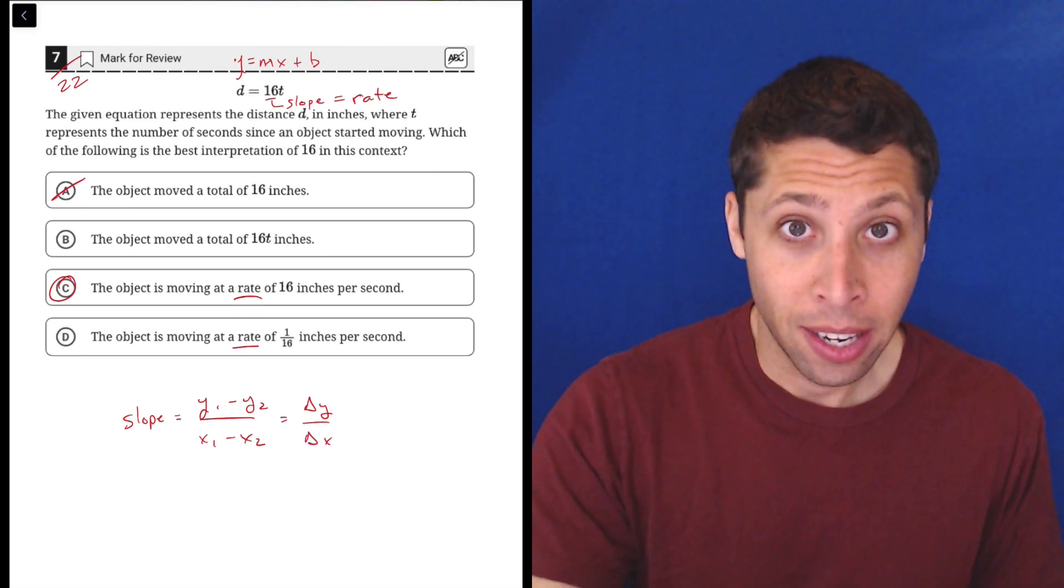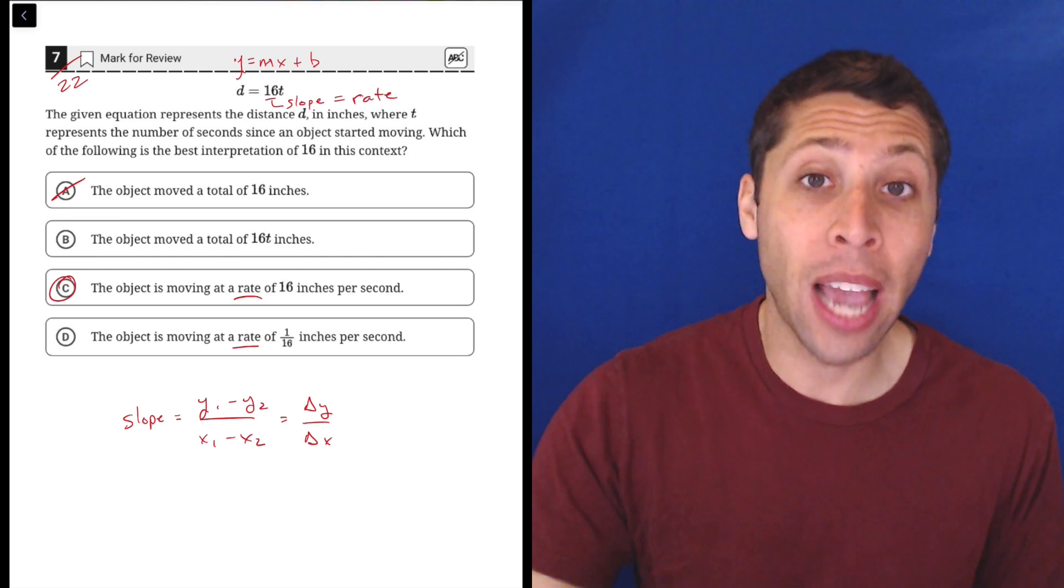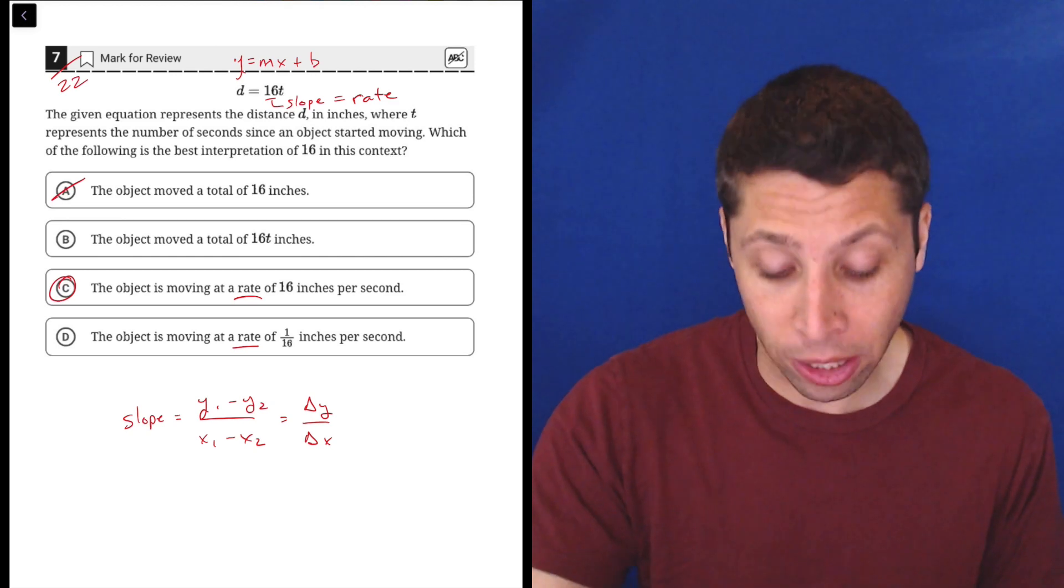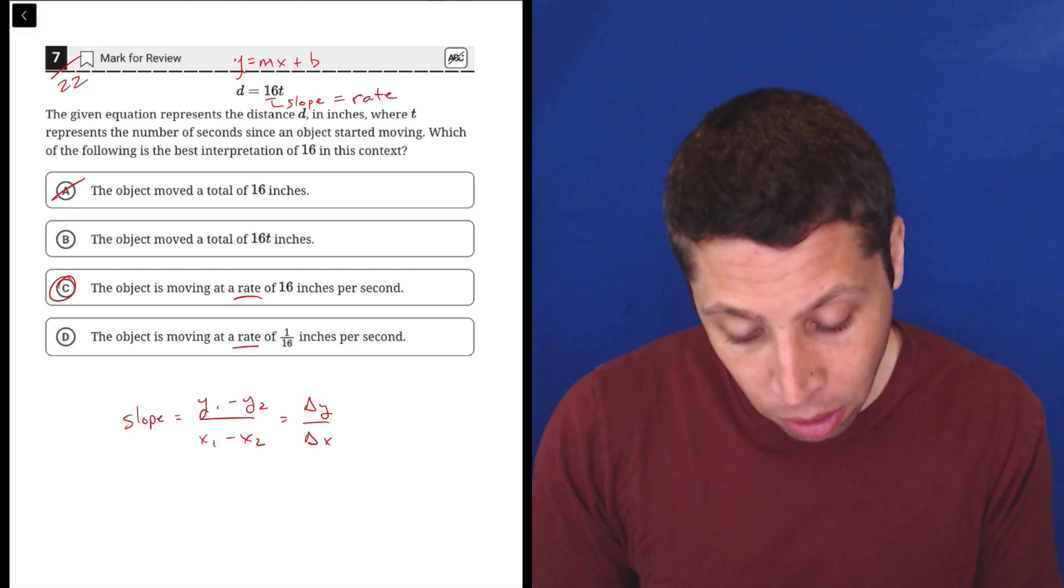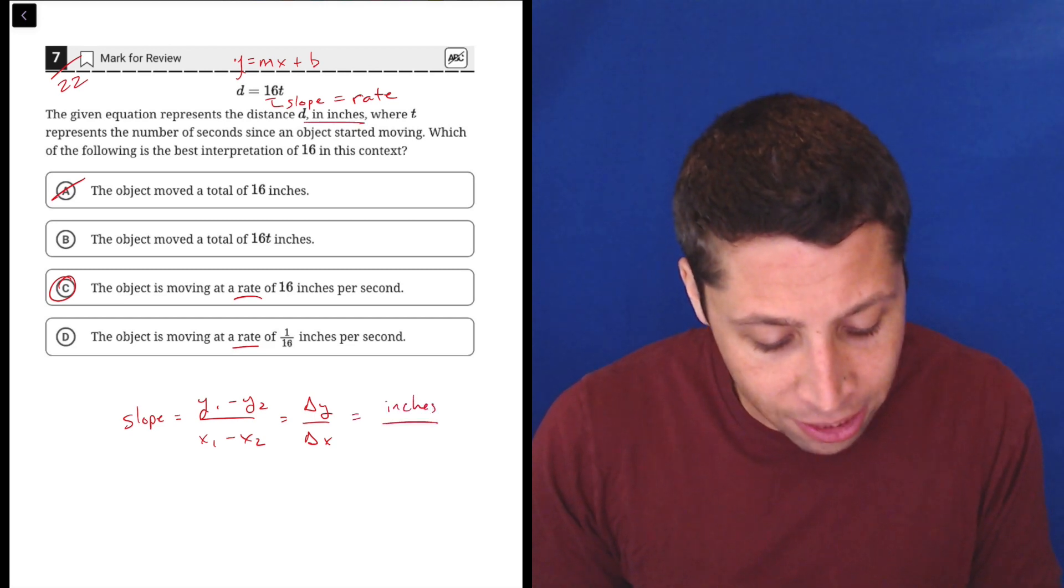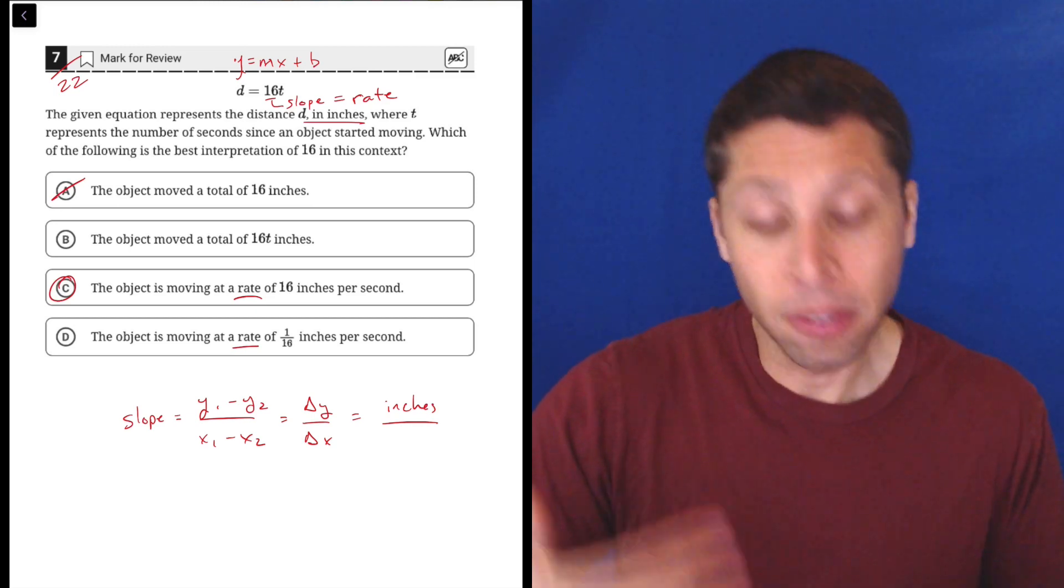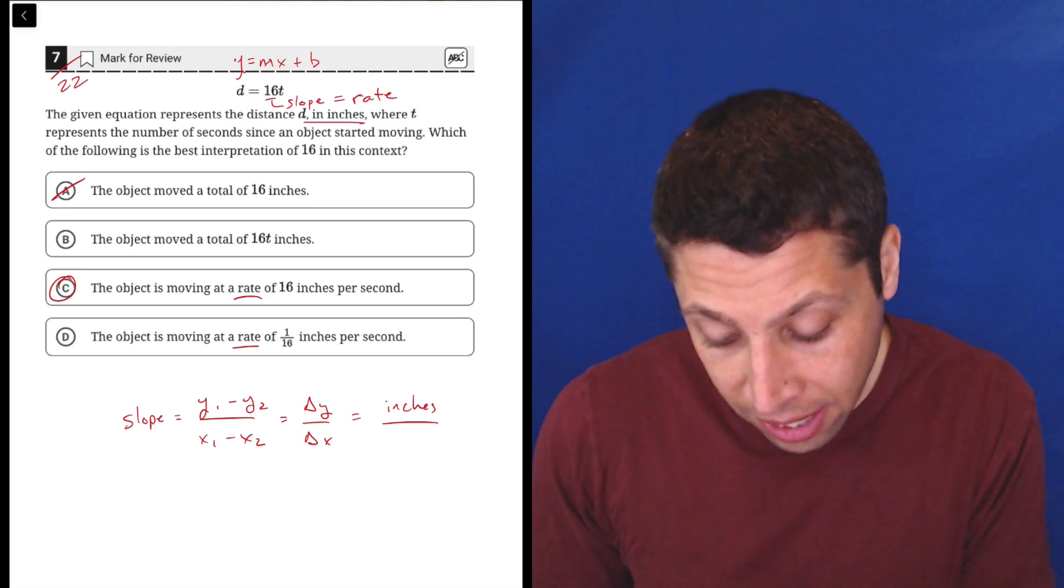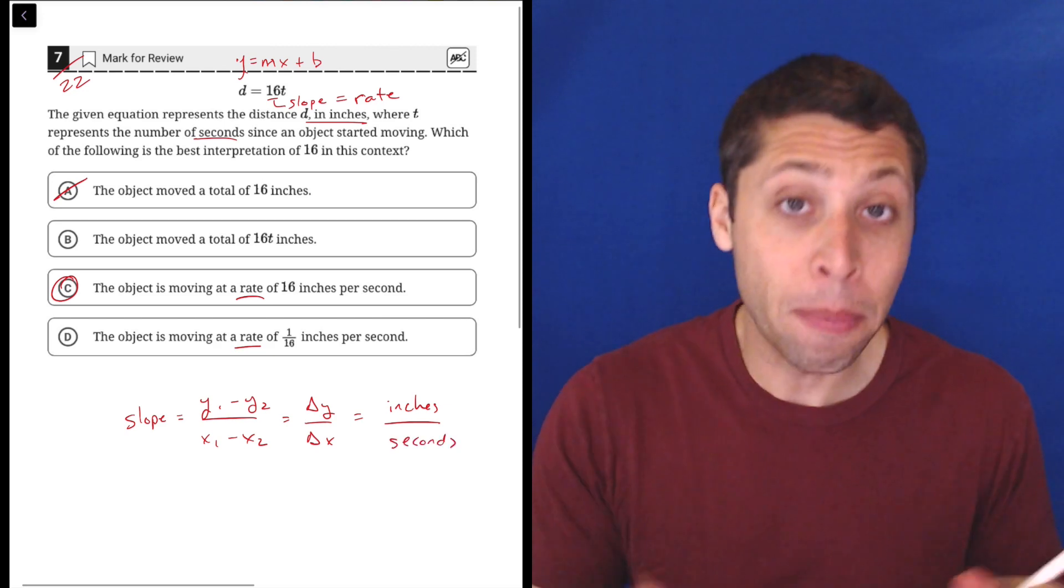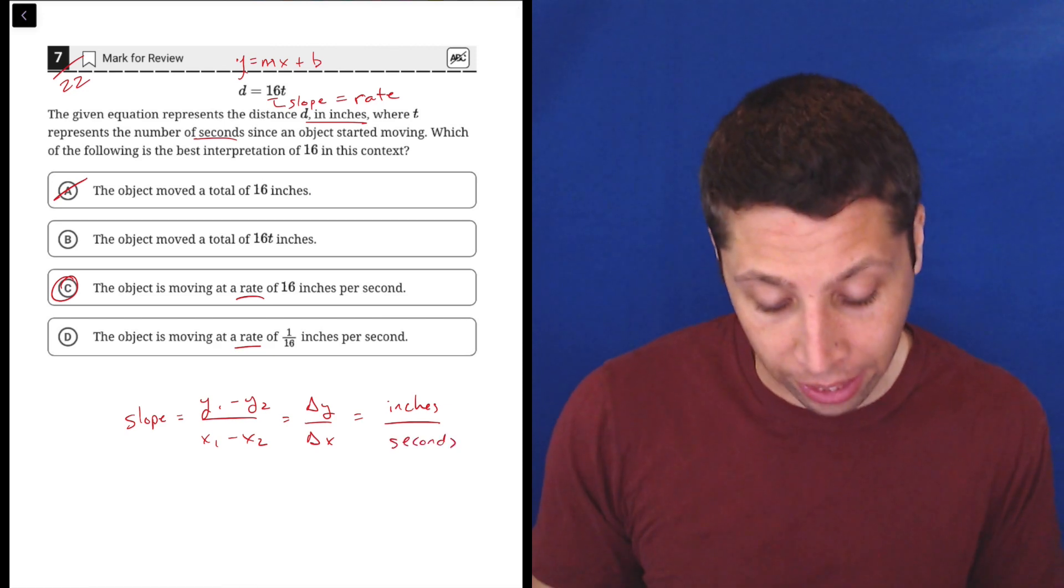So the Y unit is going to be on top, and the way that we have this equation set up, D is the Y coordinate, the Y unit, so that's the distance. The distance is measured in inches, so it's the change in the inches. Then the change in X, X in this case is T, T is the number of seconds, so we want our rate to be in that form: inches per second.